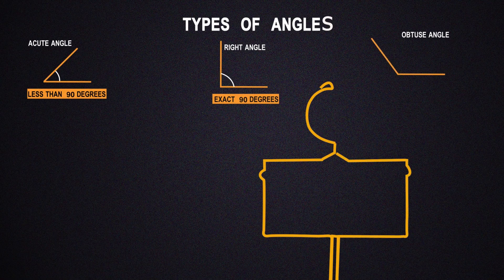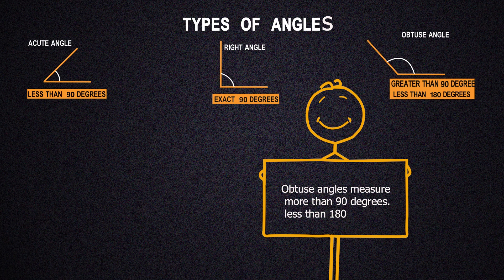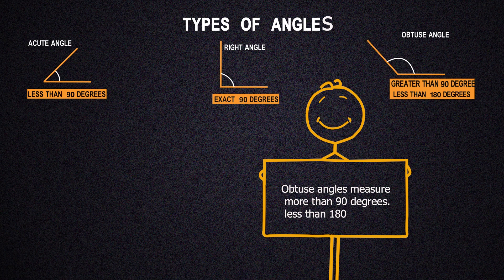Here we have an obtuse angle. Obtuse angles are angles that are greater than 90 degrees but smaller than 180 degrees.